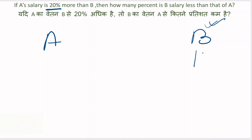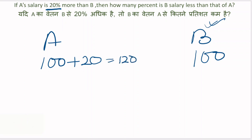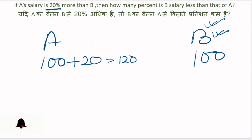Toh agar B ka salary 100 hai, toh A ka salary kitna hai? 20% zyada hai, yani 100 se 20 zyada, toh A ka salary 120 hua.